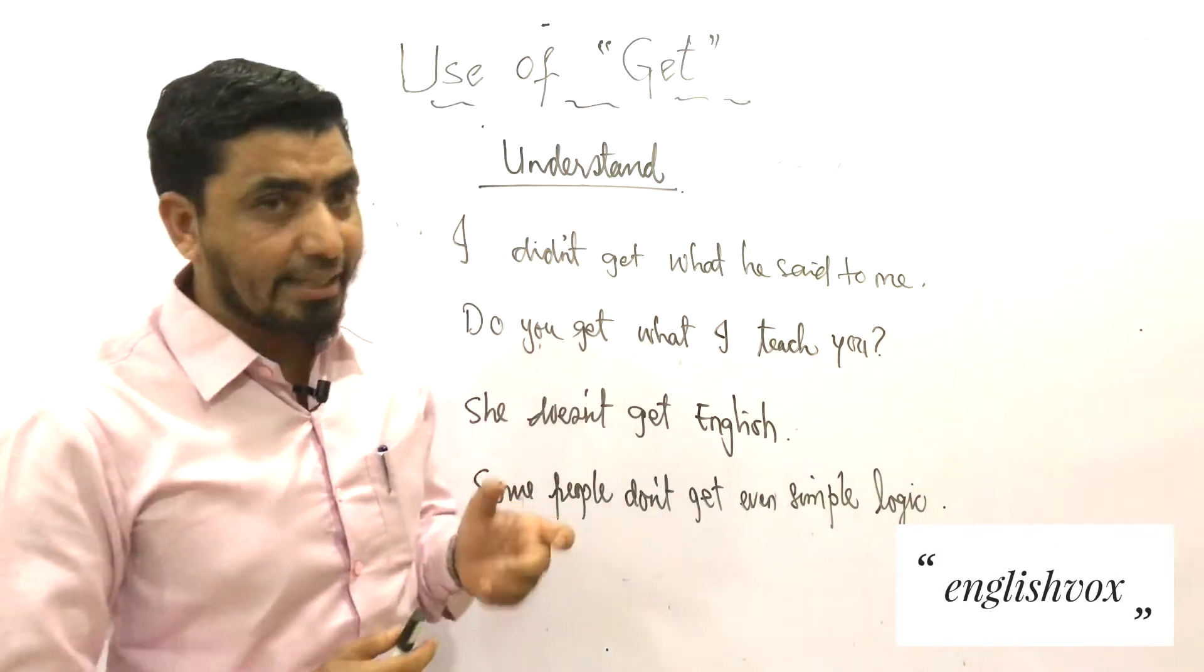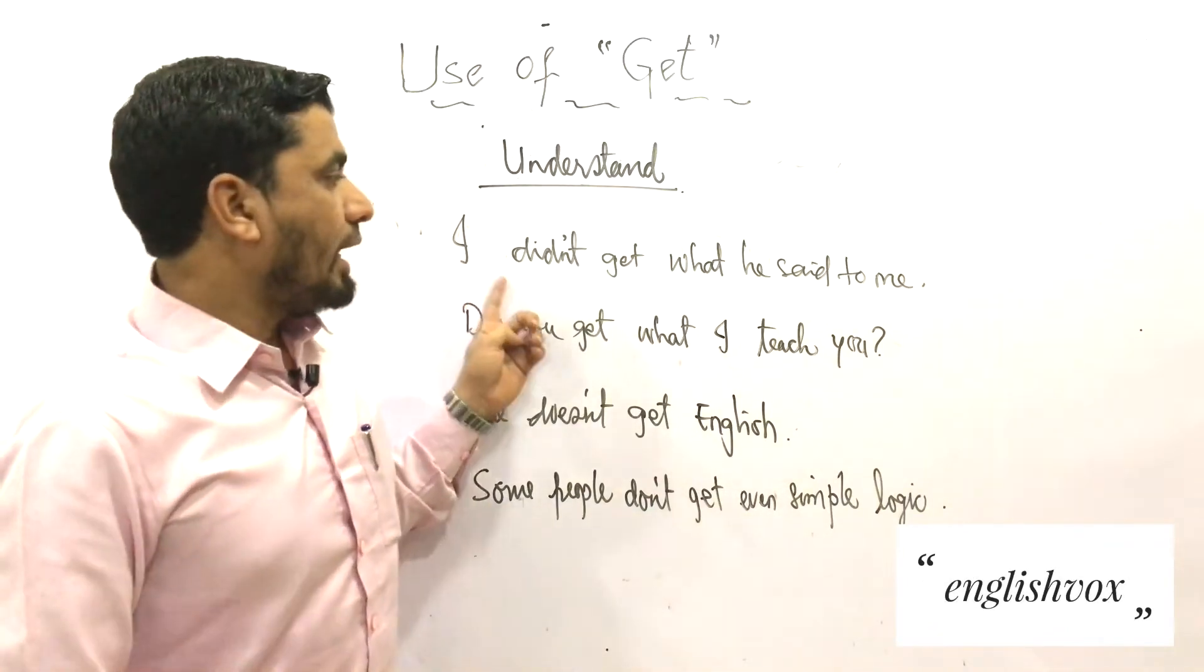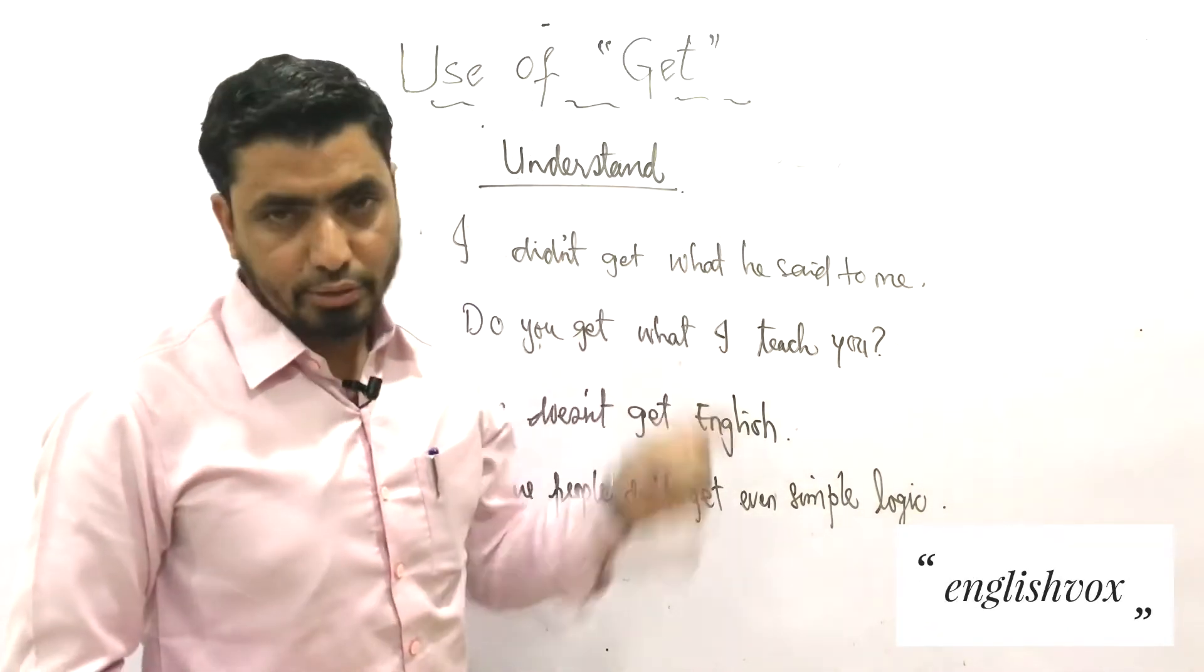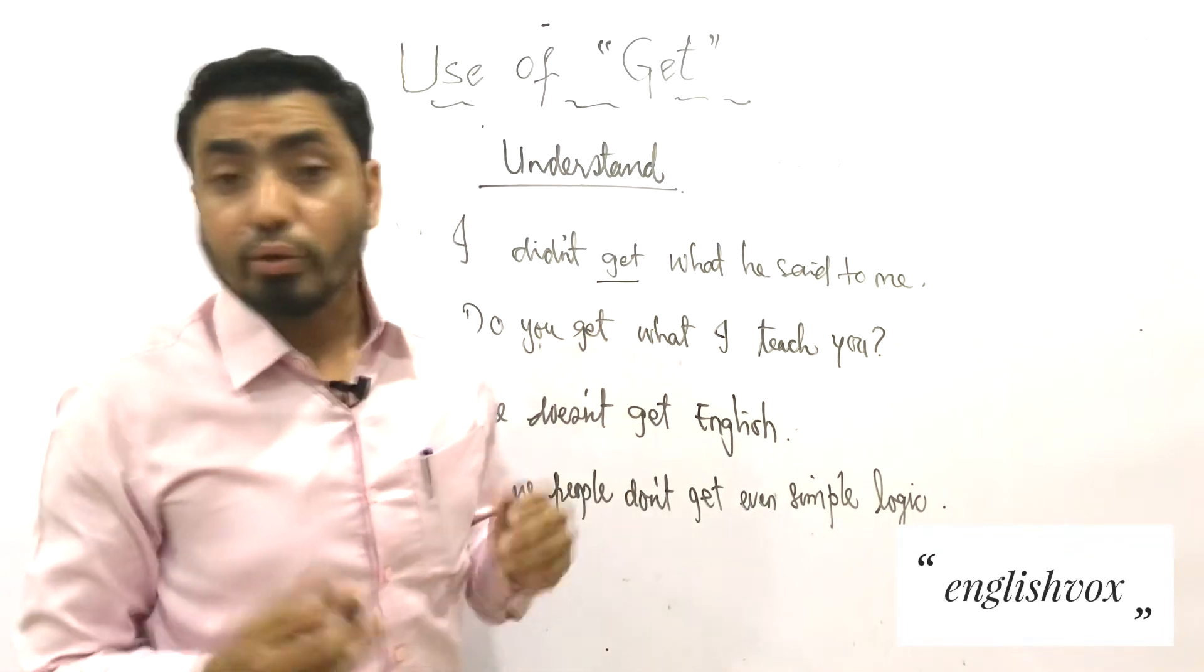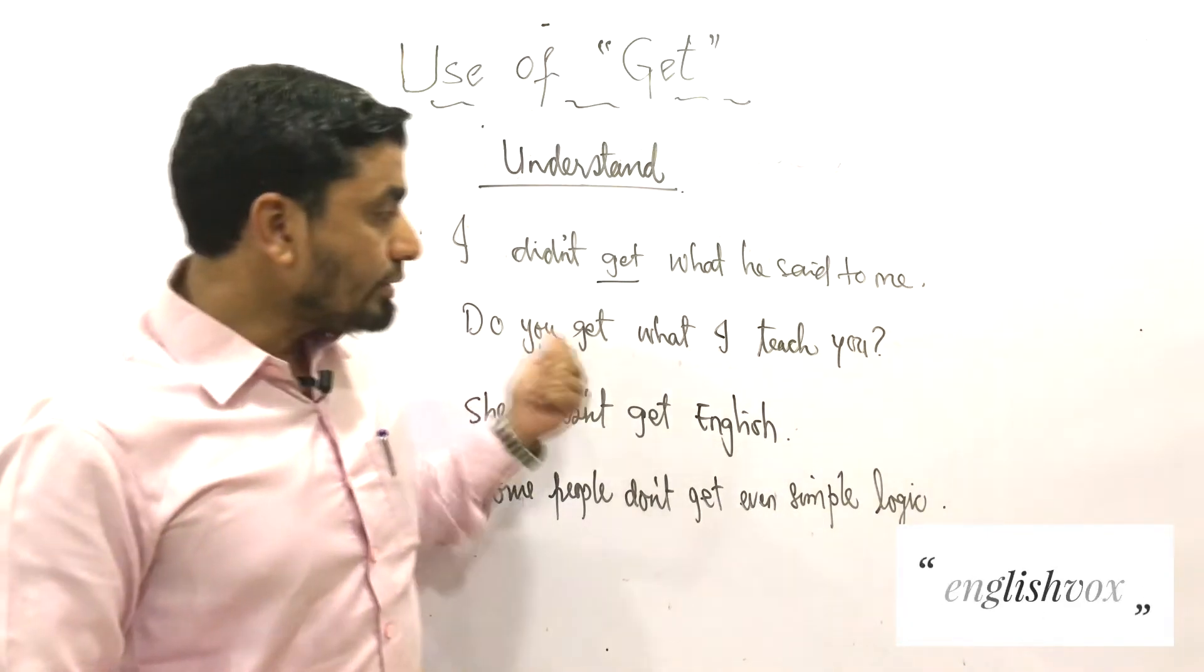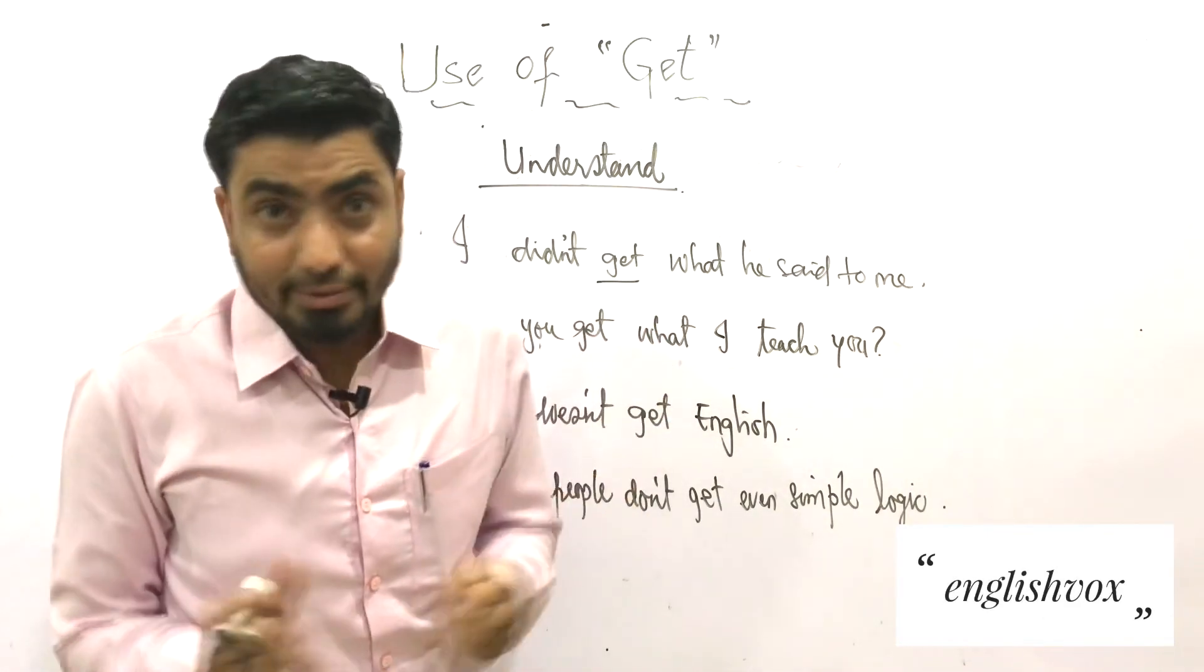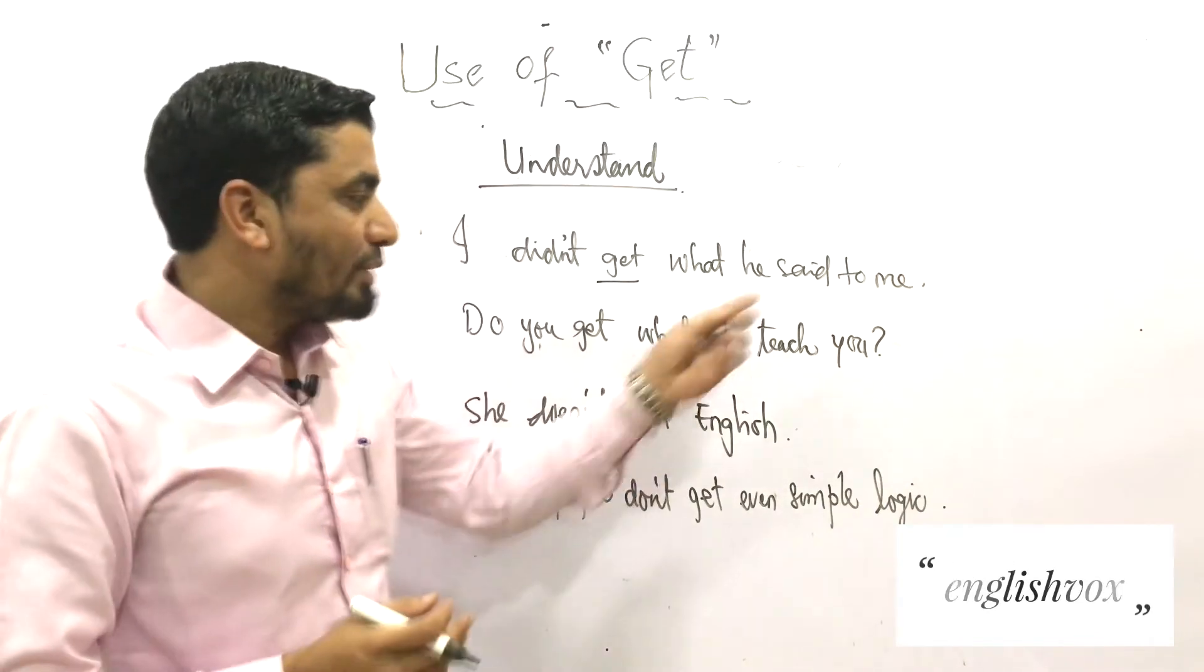Now the third use of 'get' is 'understand'. Look at these examples. The first is 'I didn't get what he said to me', which means 'I did not understand what he said to me'. Next is a question: 'Do you get what I teach you?' Your answer will be 'Yes, I get it' or 'I don't get it'.